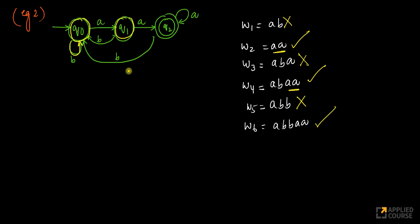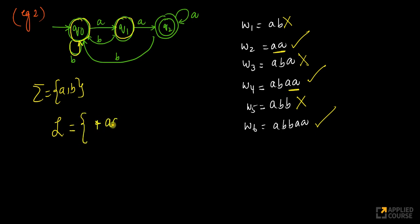So the language of this finite automaton — where the alphabet is a, b — is Σ*aa, because star represents zero or more repetitions of the symbols in the alphabet. The only key requirement is it has to end with 'aa' to be accepted by this machine.